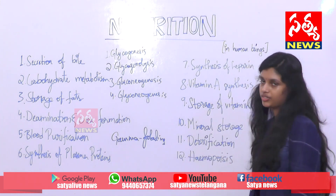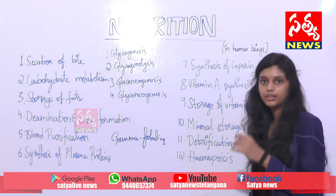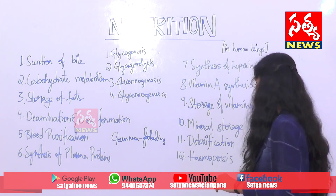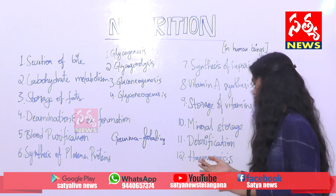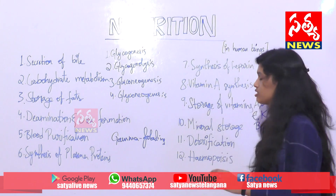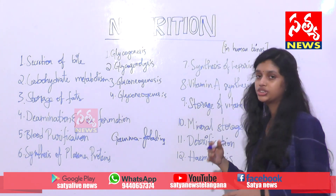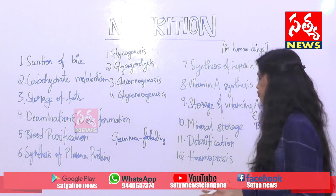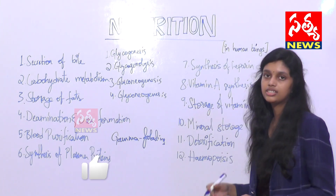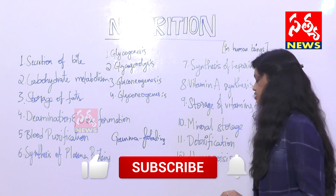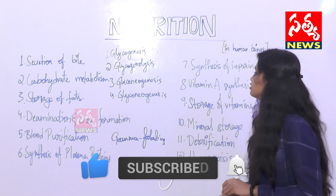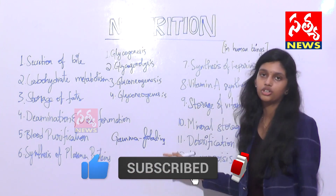Mineral storage: the liver stores minerals like iron, cobalt, copper, nickel, and molybdenum. Detoxification: the liver gets rid of toxic materials from the body. And hemopoiesis: hemopoiesis means the formation of blood cells - the liver forms blood cells like white blood cells and red blood cells in the embryonic stage.